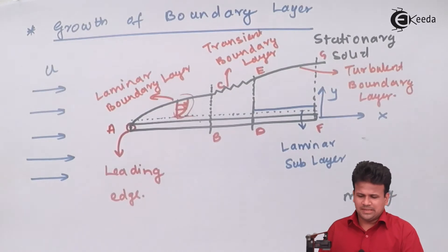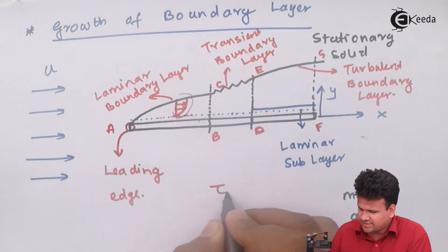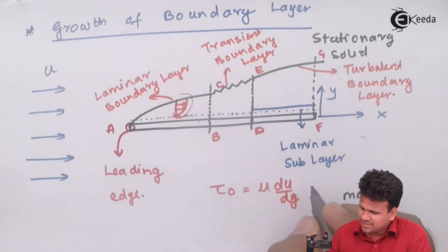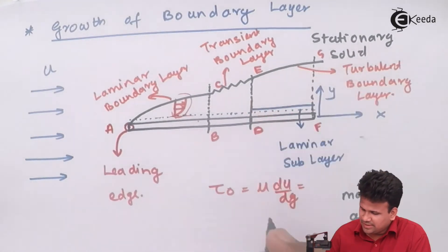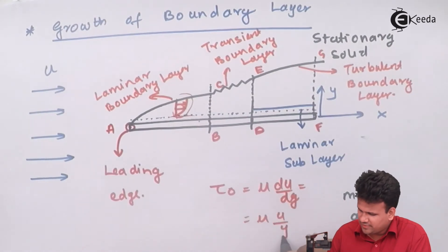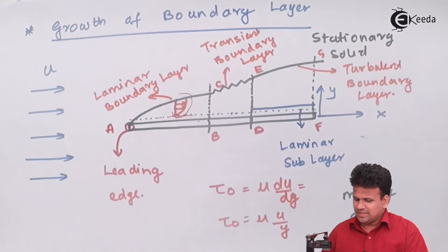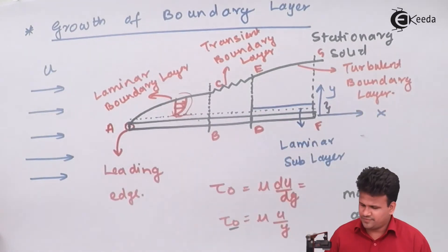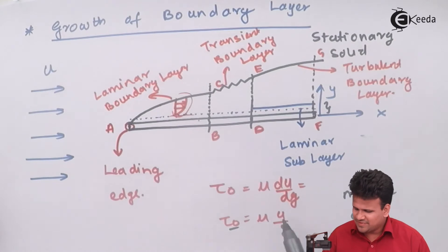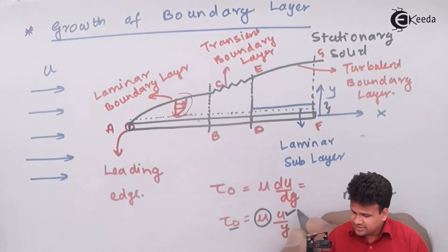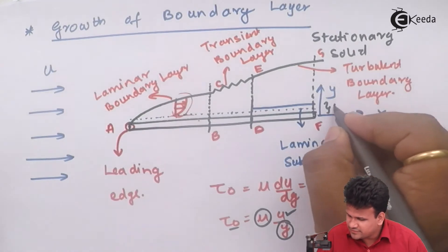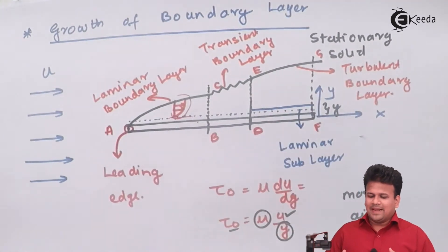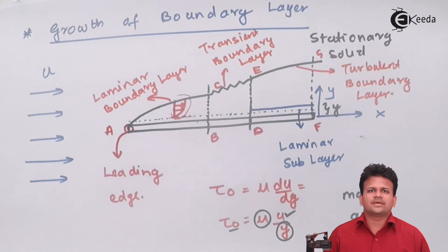Now let us study the laminar sub-layer. In the laminar sub-layer the value of shear stress τ₀ is equal to μ(du/dy). But within this sub-layer the velocity remains constant across its thickness, so this becomes τ₀ = μ(u/y). Here τ₀ is the shear stress in this small region called the laminar sub-layer, which has a definite viscosity and where velocity is constant along the thickness y.